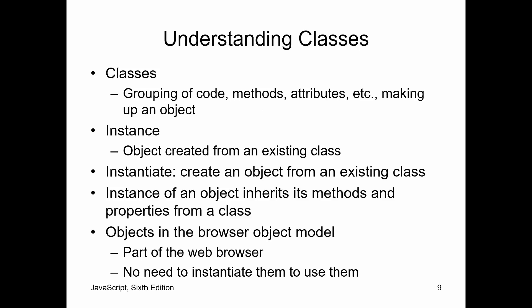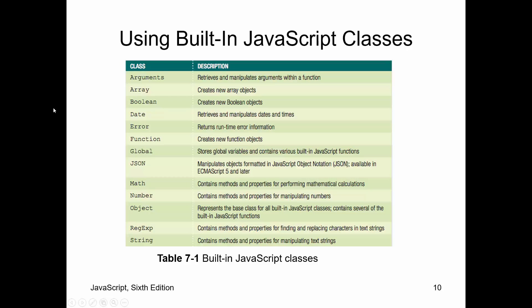So these are the author's definitions. The author defines a class as a grouping of code, methods, attributes, etc., making up an object. An instance is an object created from a class. To instantiate is to create the object. An instance of an object inherits all the methods and all the properties or data from the class. The object in the browser object model, or the BOM, is part of the web browser. You don't have to instantiate those. You get them automatically. Now, these are built-in JavaScript classes. This is stuff that you have available to you without you having to do anything special.